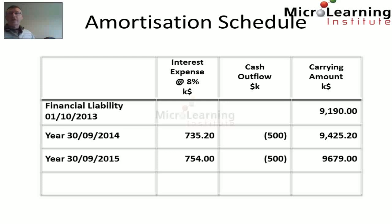For year ended 30th of September 2015, we again apply the interest expense to the carrying amount of $9.425 million. So $9.425 million multiplied by 8% gives an interest expense of $754,000. We again pay a further cash amount of $500,000, leaving us with a closing financial liability on 30th of September 2015 of $9.679 million.